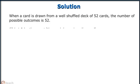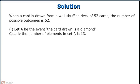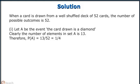1. Let A be the event that the card drawn is a diamond. Clearly the number of elements in set A is 13. Therefore, probability of A is equal to 13 divided by 52, which is 1 by 4.